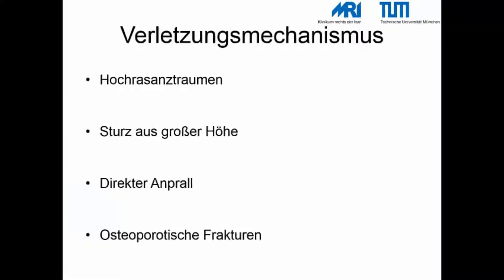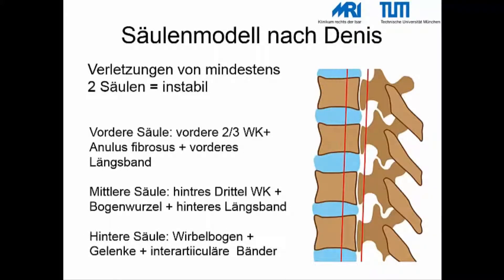Der häufigste Verletzungsmechanismus liegt in einem Hochrasanztrauma, Sturz aus großer Höhe, direktem Anpralltrauma oder bei osteoporotischen Frakturen. Zur Beurteilung der Stabilität hat sich das Drei-Säulen-Modell nach Dennis bewährt. Es besteht aus der vorderen Säule (vordere zwei Drittel des Wirbelkörpers, Anulus fibrosus, vorderes Längsband), der mittleren Säule (hinteres Drittel des Wirbelkörpers, Bogenwurzel, hinteres Längsband) sowie der hinteren Säule (Wirbelbogen, Gelenke, intraartikuläre Bänder). Liegt eine Verletzung von mindestens zwei Säulen vor, gilt die Verletzung als instabil.